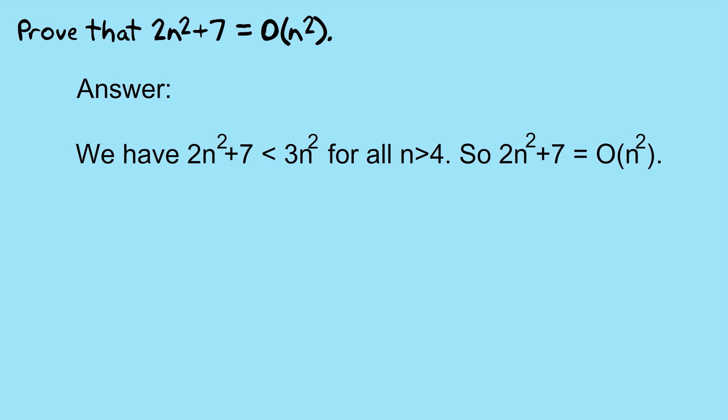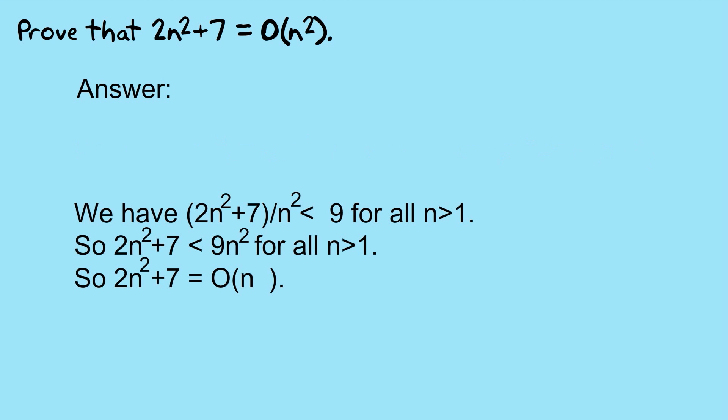Another way of solving it is to derive, sort of mathematically, a constant. So we have here, we have 2n squared plus 7 divided by n squared is less than 9 for all n greater than 1. Once again, I haven't proven that, and you probably won't need to. Then we say, so 2n squared plus 7 is less than 9n squared for all n greater than 1. And so we conclude that 2n squared plus 7 is equal to O of n squared.